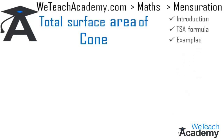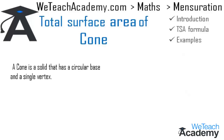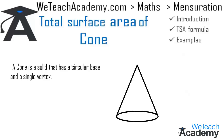Coming to the first section — the introduction. A cone is a solid that has a circular base and a single vertex. In the diagram you can see a solid object which has a circular base and a single vertex; such an object is called a cone.